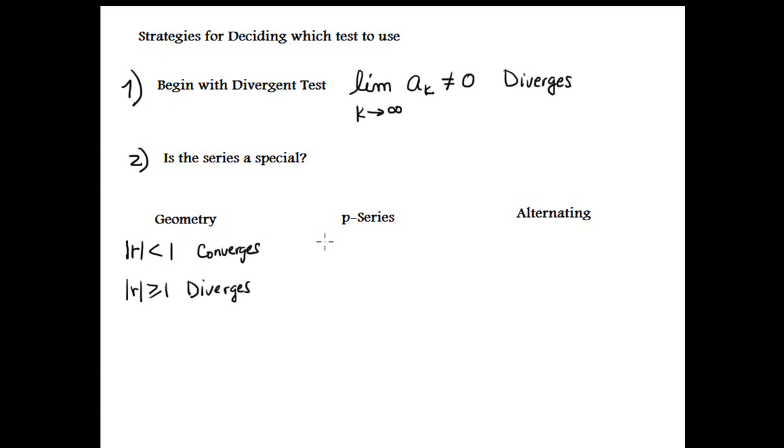P-series is easy. For p-series, if p is greater than one it converges. If p is less than or equal to one it diverges. Remember, p is the exponent in the series summation 1/n^p.